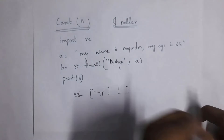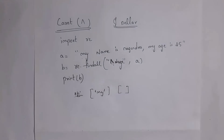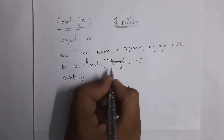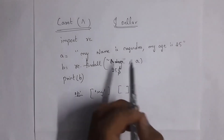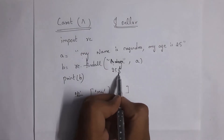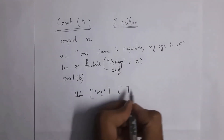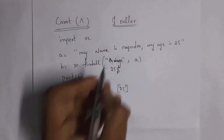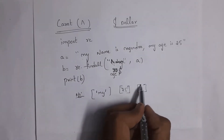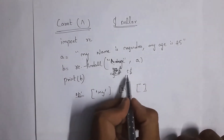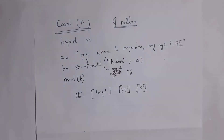Next I will explain the use of the dollar sign. While caret checks if characters are at the start, dollar sign checks if characters are at the end. Writing '25$' checks whether '25' is available at the last — yes it is, so output is ['25']. If I write 'age$', age is not at the end, so it returns empty list. Writing '5$' checks if 5 is at the end — yes, so output is ['5'].